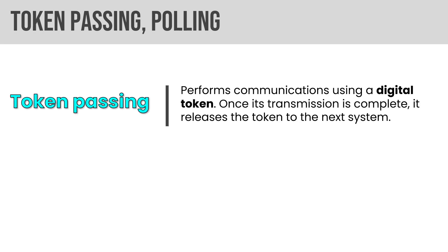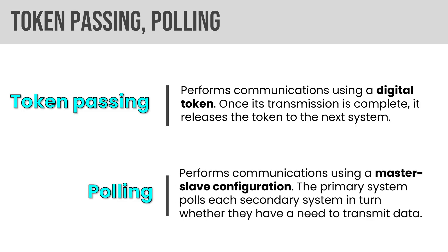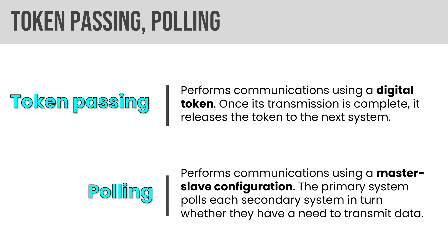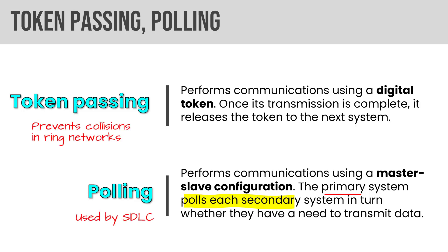Token passing performs communications using a digital token — once transmission is complete, it re-releases the token to the next system that wants to communicate. Polling performs communications using a master-slave configuration, where the primary system polls each secondary in turn to see if they have data to transmit. Token passing prevents collisions in ring networks. Polling is used by SDLC — and to be clear, SDLC here means synchronous data link control, not software development lifecycle. It's a layer-2 protocol used by IBM Systems Network Architecture. Don't confuse these.